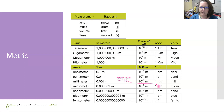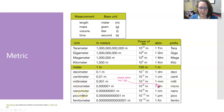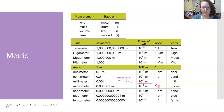They indicate fractions: deci meaning a tenth, centi a hundredth, milli a thousandth, micro a millionth, and so on. Once we go from milli to micro to nano, we're going a thousand times less each step.